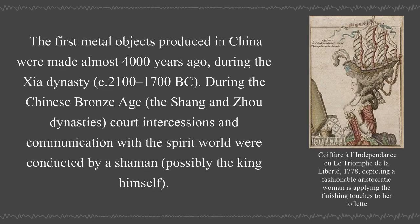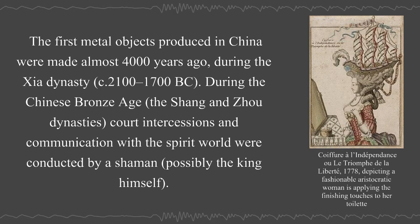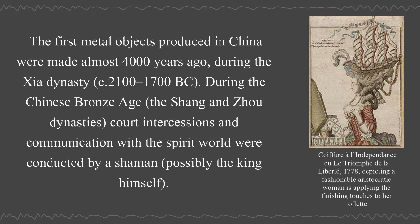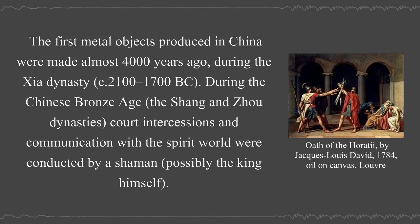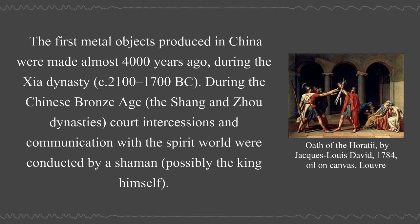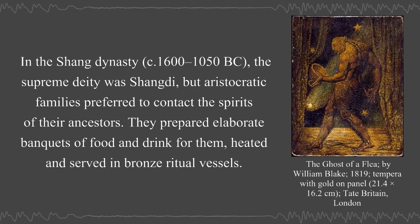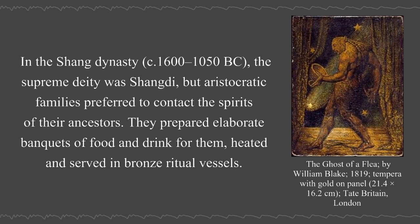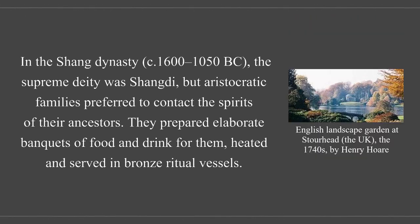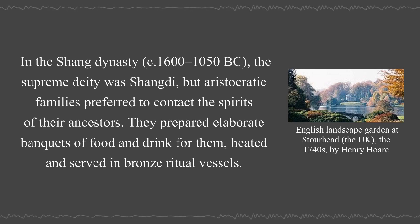The first metal objects produced in China were made almost 4,000 years ago, during the Xia dynasty circa 1700 BCE. During the Chinese Bronze Age, the Shang and Zhou dynasties, court intercessions and communication with the spirit world were conducted by a shaman, possibly the king himself. In the Shang dynasty circa 1600–1050 BCE, the supreme deity was Shangdi, but aristocratic families preferred to contact the spirits of their ancestors.